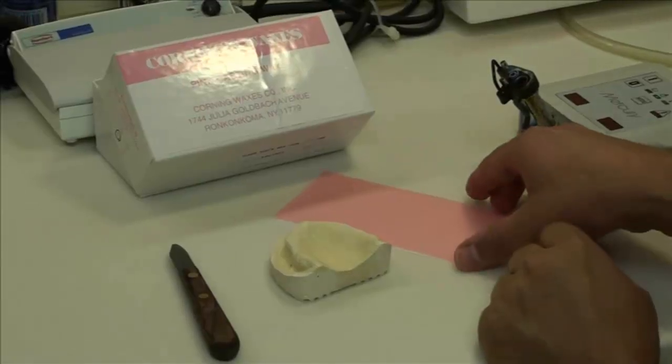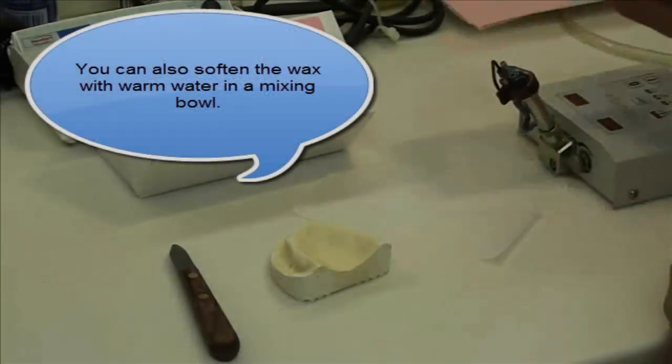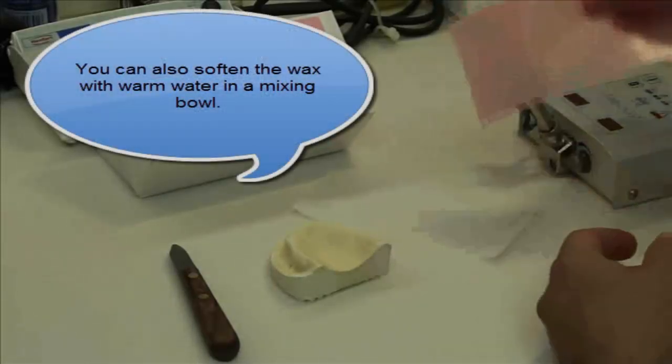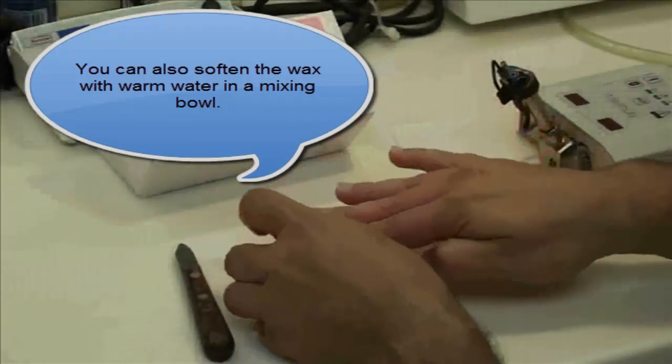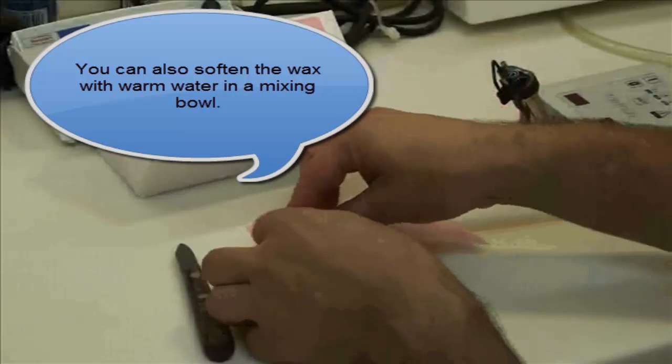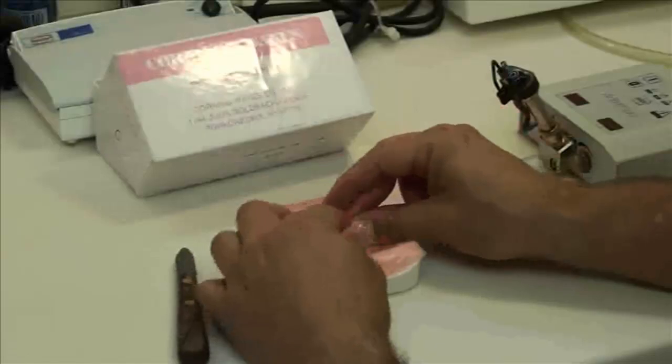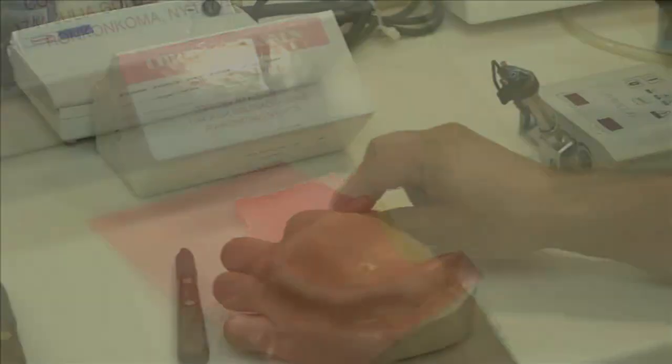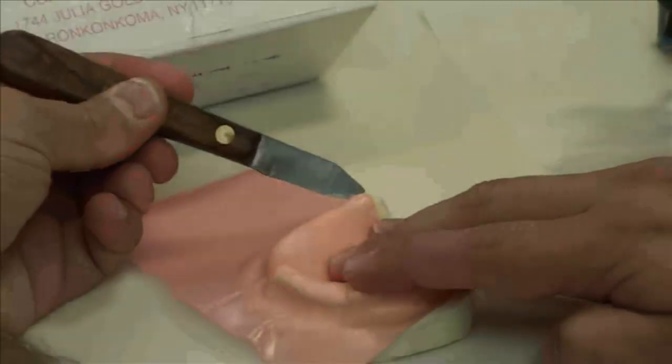Adapt the FiberForce spacer wax to the model. If the wax is softened through the use of a flame, a double thick layer of wax may be preferred to create the correct amount of space, as a flame can cause the wax spacer to thin out too much. Softening the wax with warm water will reduce the chances of over thinning the wax. Trim the excess wax to complete the spacer.